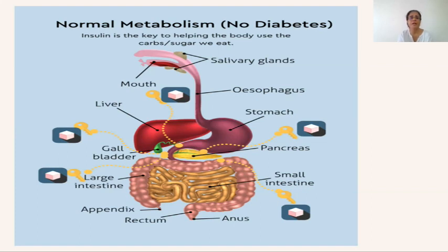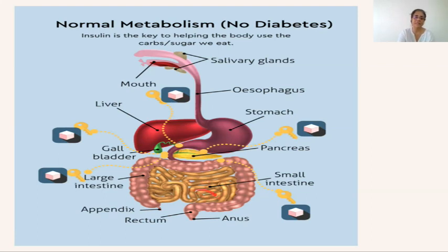Bile emulsifies fat and aids its digestion. The liver also stores toxins and is the site of synthesis of many vitamins and minerals — it is really important. Then we have the large intestine: the ascending, transverse, and descending colon. The small intestine is actually 26 feet long and is convoluted, placed within the large intestine. There is a rectal ampulla where stool is stored until evacuation through the anus.